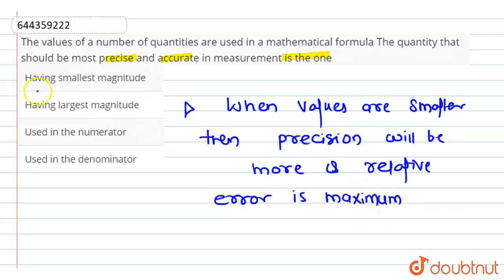We can say that having smallest magnitude or smaller magnitude values are used in mathematical formula, so that we get the more precise answer or more precise measurement. Because numerator and denominator will not make any sense, and if we take larger magnitude values then precision will be greater.